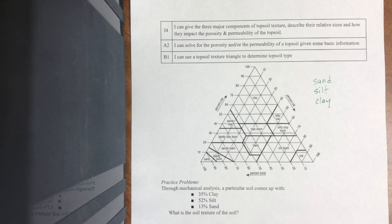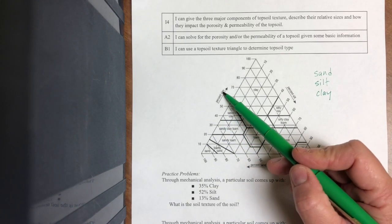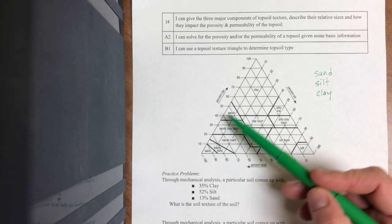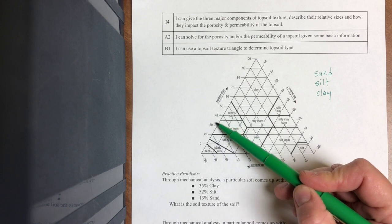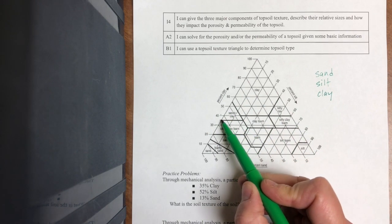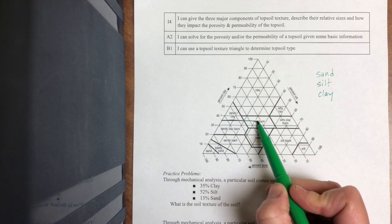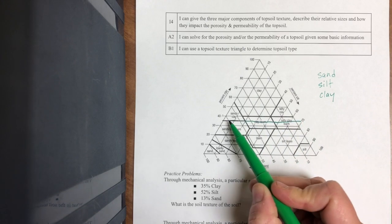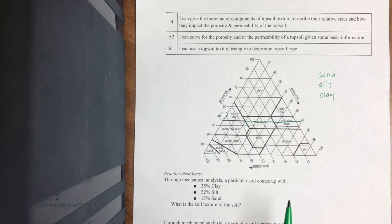So I have this mechanical analysis I do, and a particular soil comes up and it's 35% clay. So I need to find the clay side of this, so here's clay, it's 35%, so 35 is going to be between 30 and 40, and it's right in the middle, so I'm going to go right across here. How do I know to go straight across, not at an angle? I'm looking at those lines there.